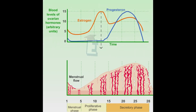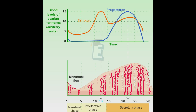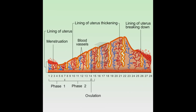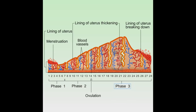FSH and LH increase to stimulate the secretion of estrogen on the 13th day and progesterone on the 22nd day. During the secretory phase, the ovum will mature and will flow out of the ovary. At this time the uterus will be thick, and hence the uterus is ready to accept the zygote.